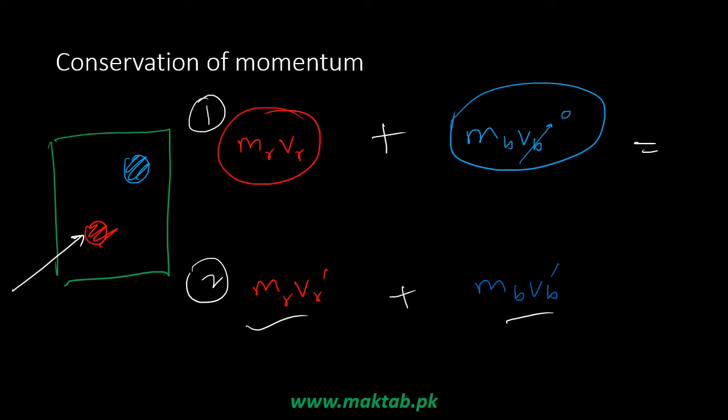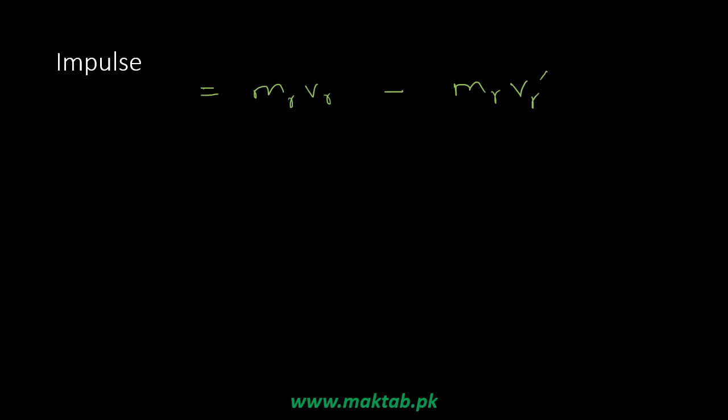Once motion is injected into the system, it will always remain unless external forces like air resistance, friction, or walls dissipate it. Ideally, momentum is conserved. The change in momentum — from MR·VR to MR·VR' — represents how much momentum was injected. This change in momentum due to applied force over time is called impulse, and it is an important quantity for understanding how momentum changes in a system.